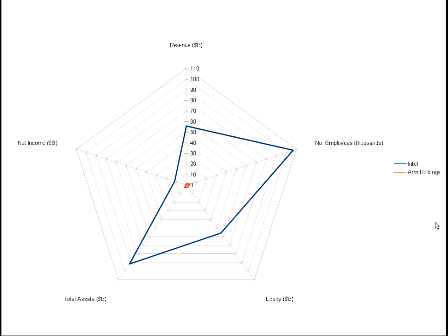So here's an example of a potential radar chart. This is a comparison of Intel to Arm Holdings. You can immediately see by a quick glance at this chart that Intel is vastly bigger than Arm Holdings. Arm is this tiny little dot in the middle, whereas Intel is this huge bit.